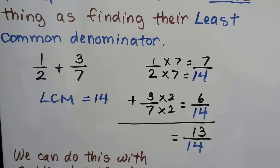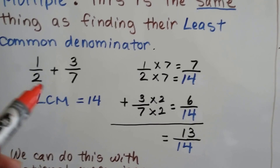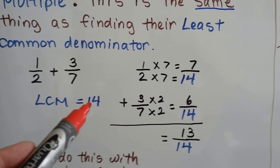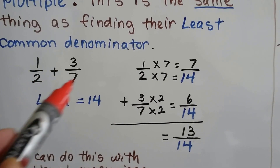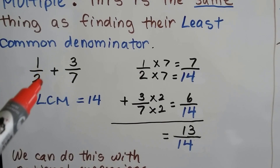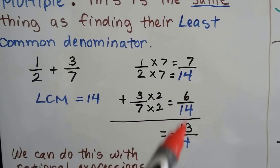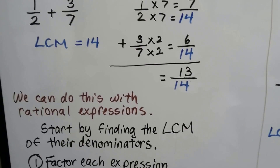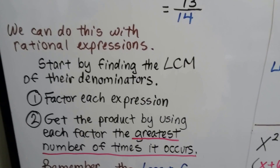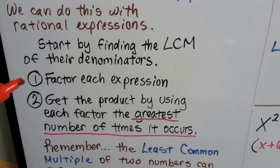If we wanted to add 1/2 plus 3/7, we just need to find the least common denominator — the least common multiple of 2 and 7. That would be 14. We figure out what to multiply each fraction by so the denominators become 14, and then we can add them. We can do this with rational expressions also. We start by finding the least common multiple of their denominators, and then we can add or subtract them.